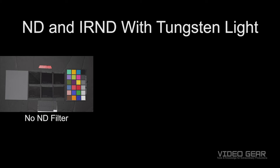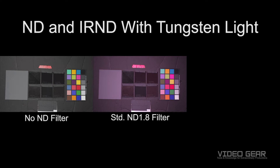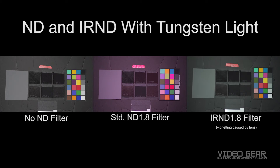In our first example, we're going to show you IR pollution using a number of fabric swatches under tungsten light. The first example is without an ND filter, showing that all the fabric swatches are still black, just as they appear in person. Now when we put a standard ND filter and keep the same white balance, the fabric swatches turn various degrees of magenta, since tungsten lights output a lot of infrared light. When we use the Format Firecrest IR ND filter and keep the same white balance, the fabric swatches are back to how they appear in person.